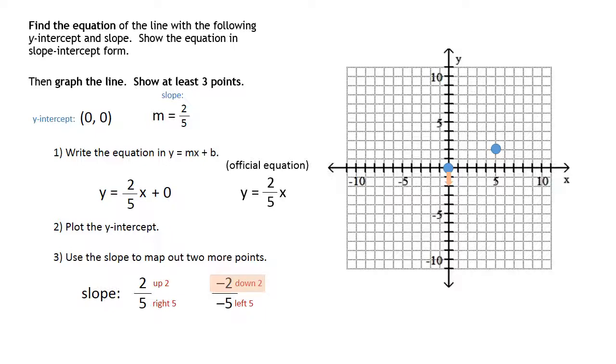And we can go down 2 from the origin and left 5 and plot a third point. Notice they do all line up, and you can just draw a line through them. And again, the special case was this line goes through the origin.